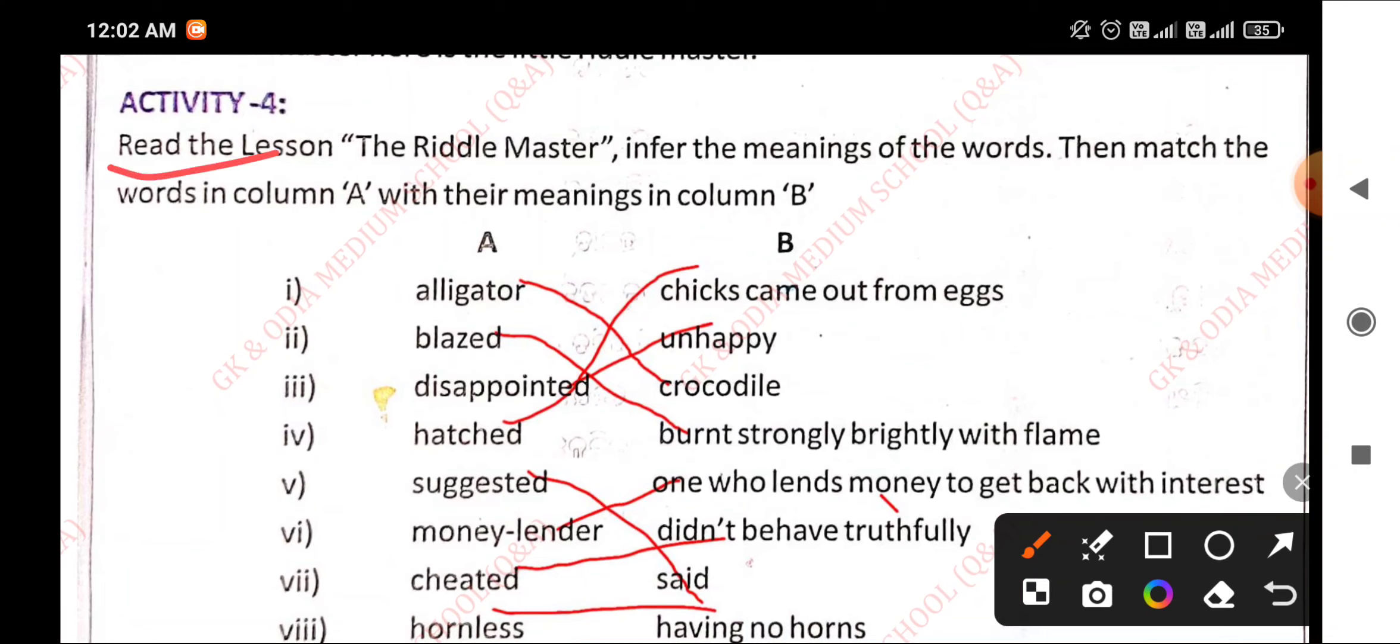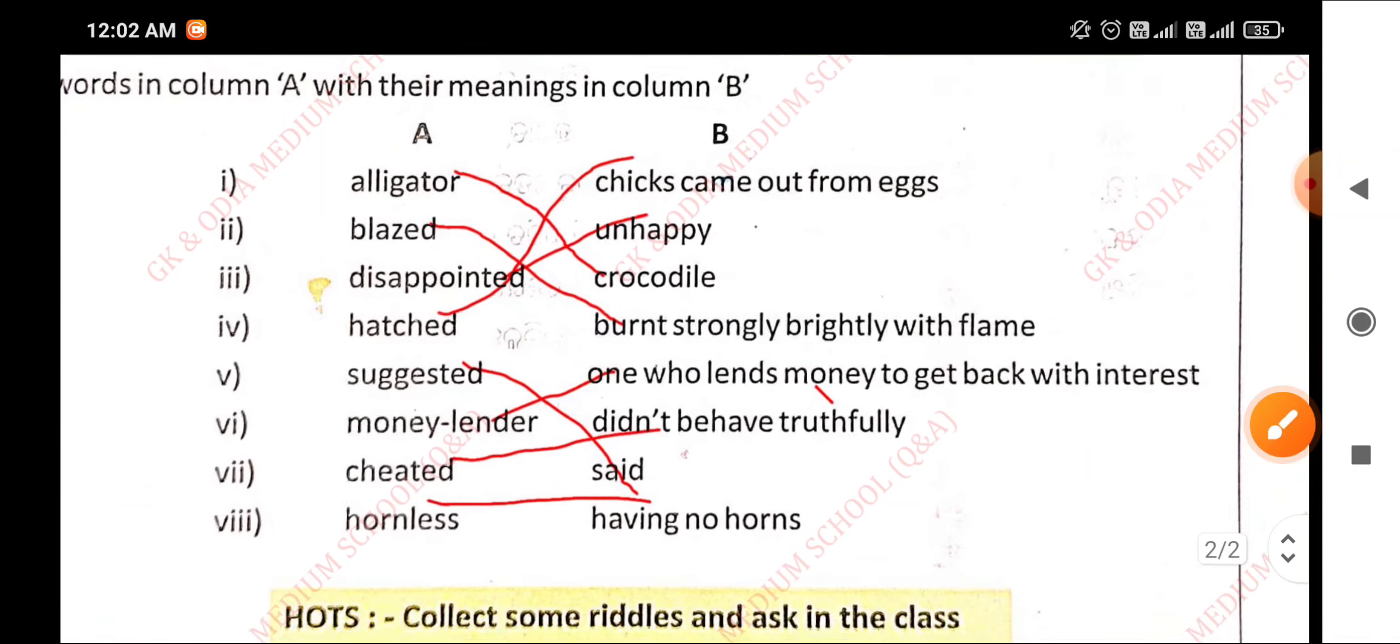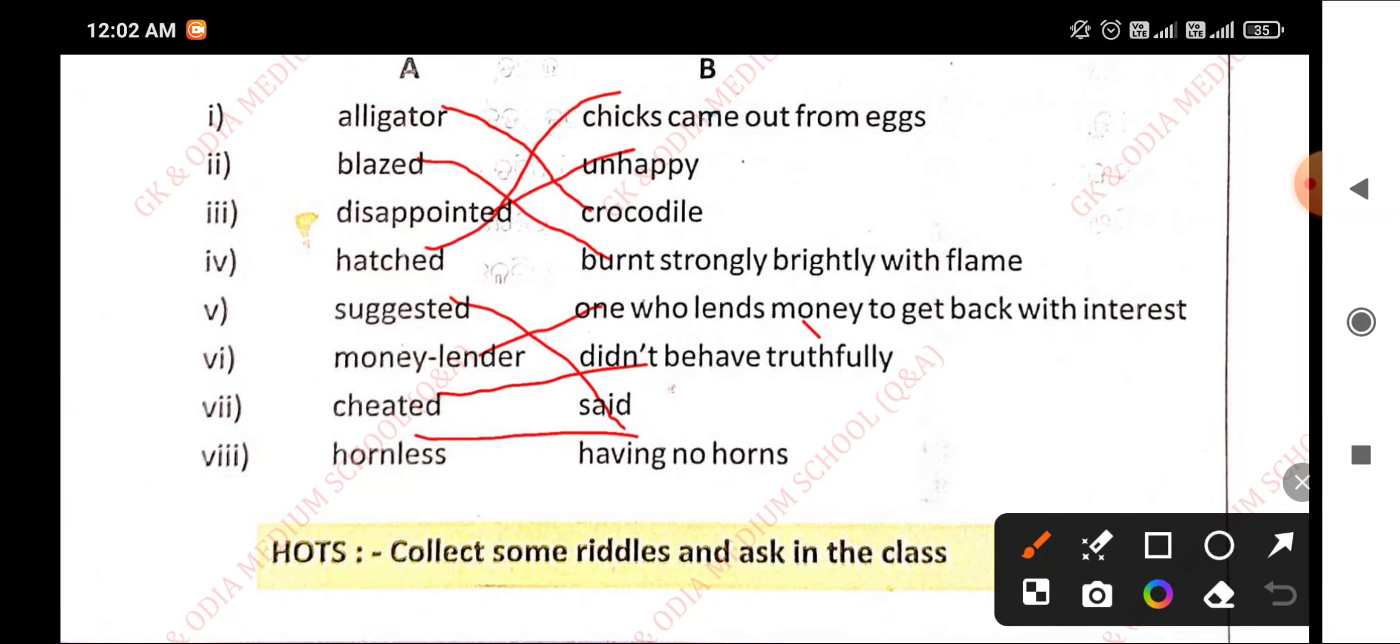Activity 4: Read the lesson The Riddle Master, infer the meanings of the words, then match the words in column A with their meanings in column B. Alligator means crocodile, blazed means burned strongly bright with flame, disappointed means weren't happy, hatched means chicks came out from eggs.